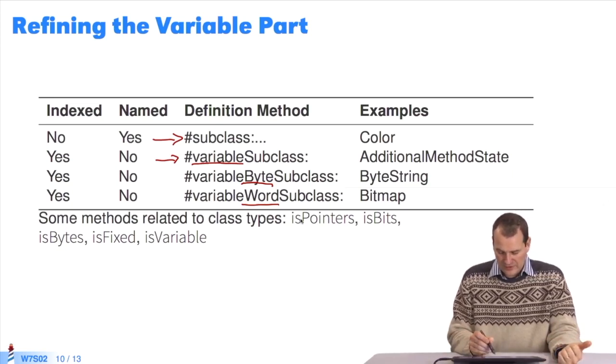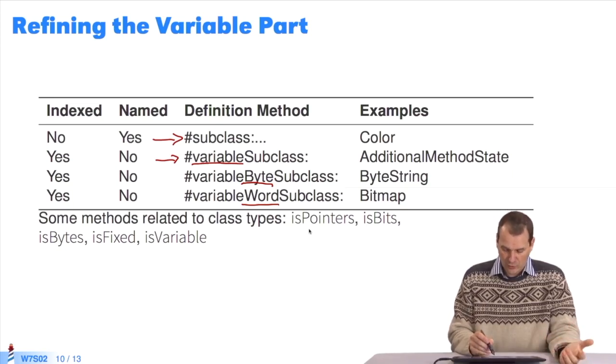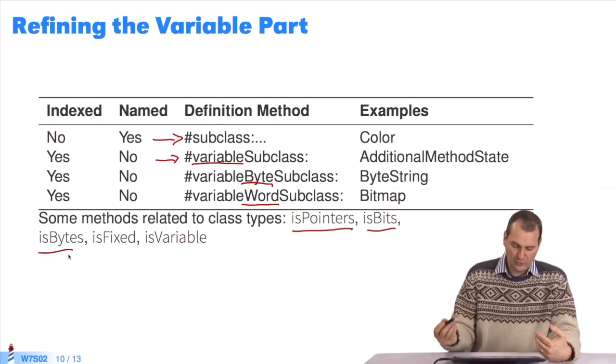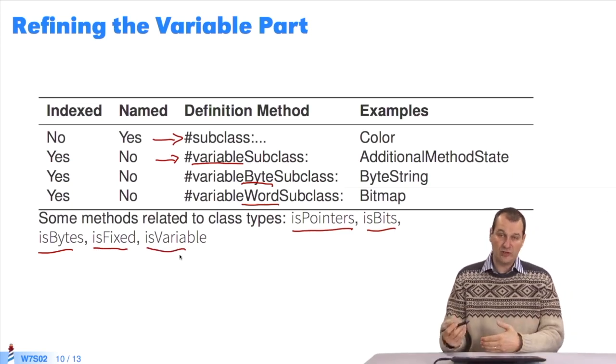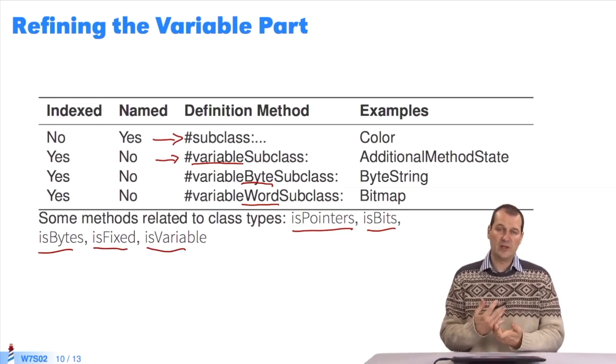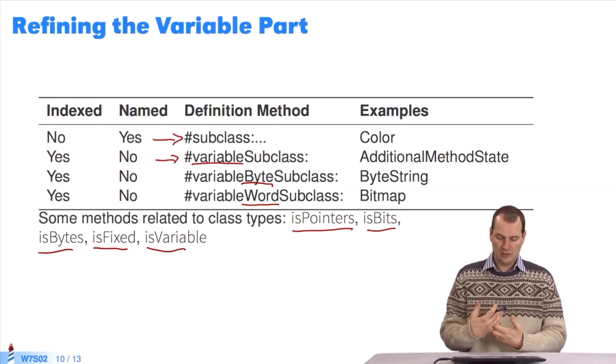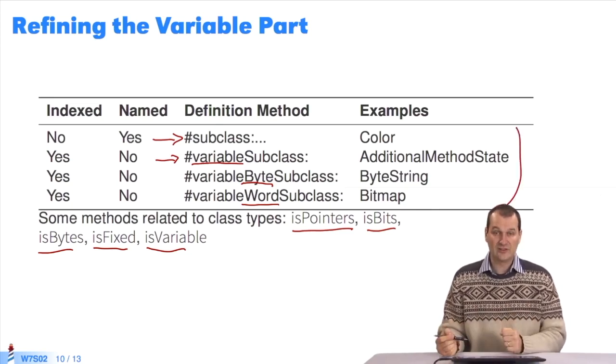Since Pharo is a reflective system, we can ask it questions. So, using these methods, we can make queries, such as whether the class size is fixed or variable, or whether it stores pointers or bytes, for example. We have the entire API to inquire about the type of class. This list was created by making queries to the system.